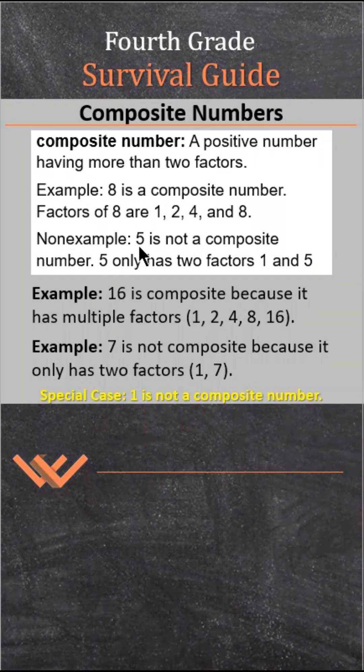A non-example: 5 is not a composite number. 5 only has two factors — 1 and 5.